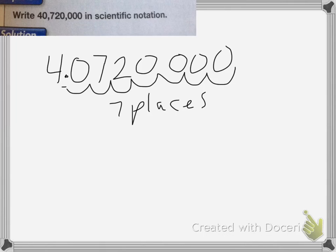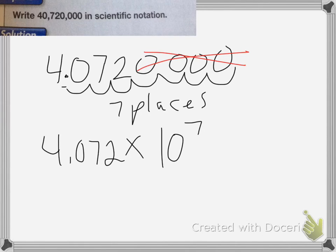Now, we're going to get rid of the zeros and write 10 to the 7th power to show that the original decimal place is 7 places to the right. So, I end up with 4.072 times 10 to the 7th power.